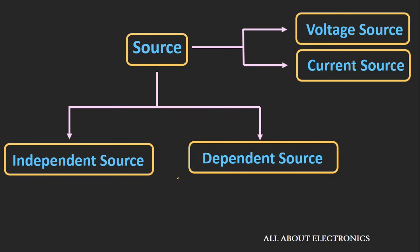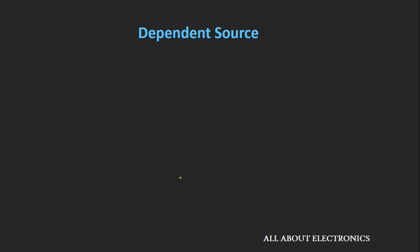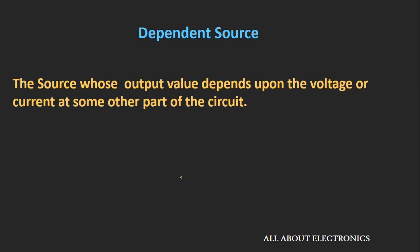Now let's see the dependent sources. As the name suggests, the dependent sources are the sources whose output value depends upon either voltage or current at some other part of the circuit.